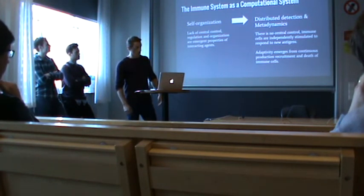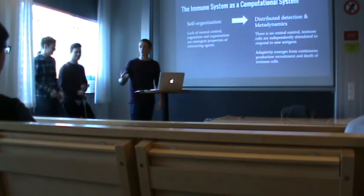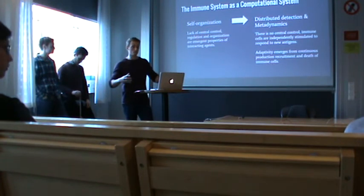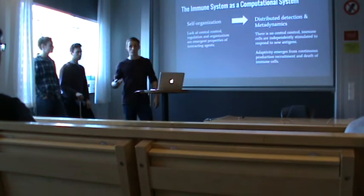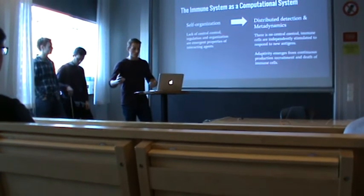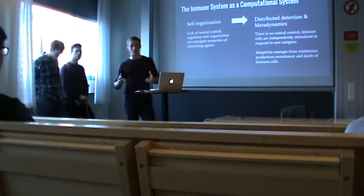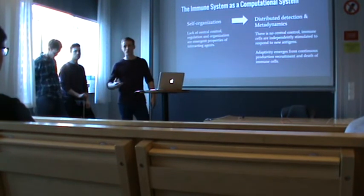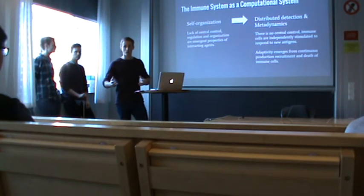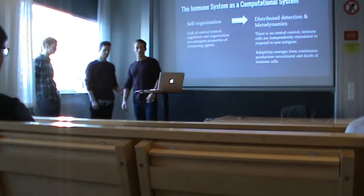Last but not least, self-organization: all these processes are done in a distributed fashion without central control. The detection of antigens is inherently distributed throughout the system, with each cell stimulated independently and then spreading information through the system. The diversity, learning, and memory of the system are all emergent properties of a constant process of gene recombination, mutation, and programmed cell death. This means the robust computational system is built from the ground up by simple interacting agents — essentially through a very fast and local evolutionary process — which is what makes the system so alluring to recreate artificially.